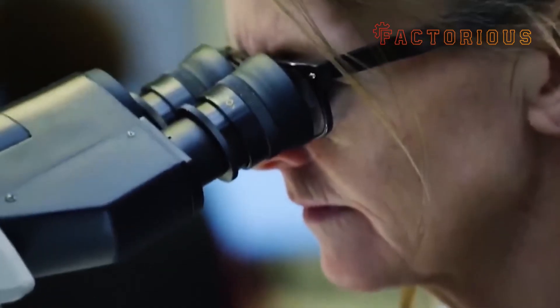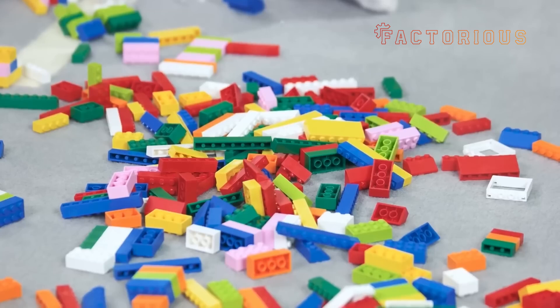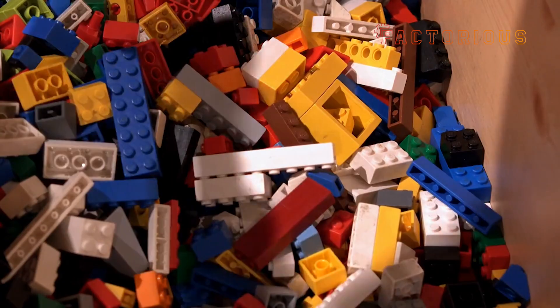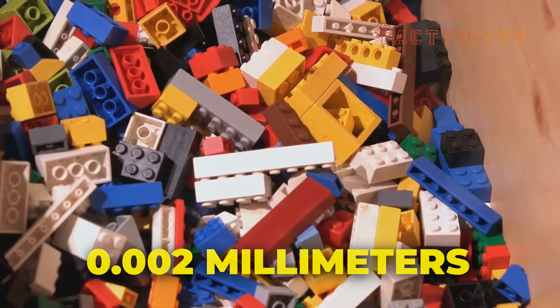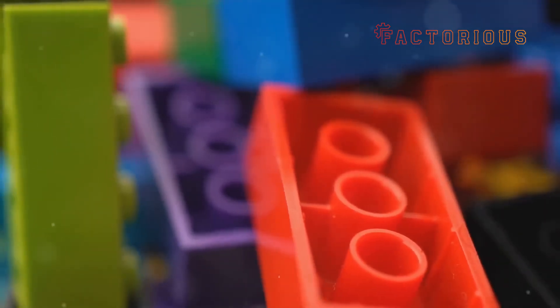This molten plastic is then injected under enormous pressure, around 25 to 150 tons of force, into precision-engineered steel molds. Each mold is a masterpiece on its own, designed with microscopic accuracy. The tolerances are so tight that the difference between two Lego bricks must not exceed 0.002 millimeters. To put that in perspective, that's smaller than a human hair.